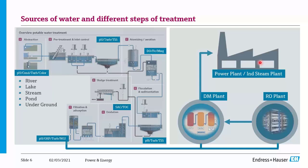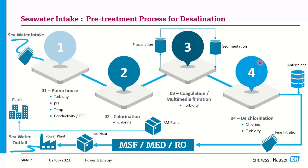For the other 95 to 96 percent of global sources — seawater — a different treatment process must be followed. At the seawater intake, the same basic parameters must be monitored: turbidity, pH, temperature, conductivity, and TDS. Once we know these, we can determine the disinfection required, because seawater contains a lot of bacteria and fungus. There will be a chlorination setup to neutralize those components.